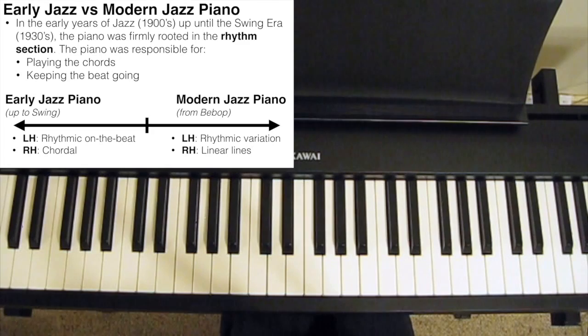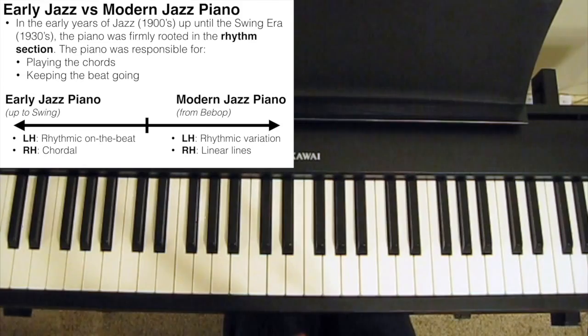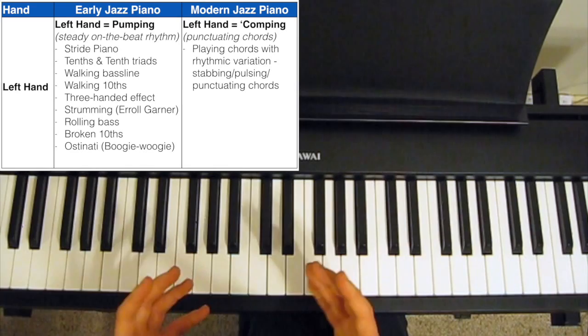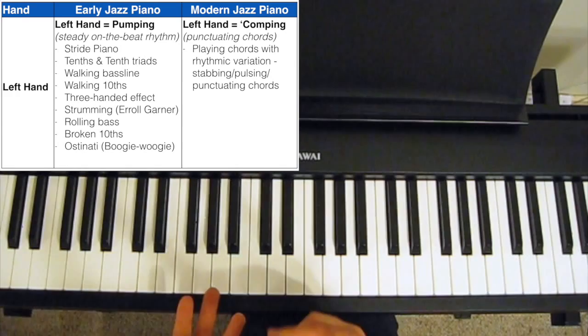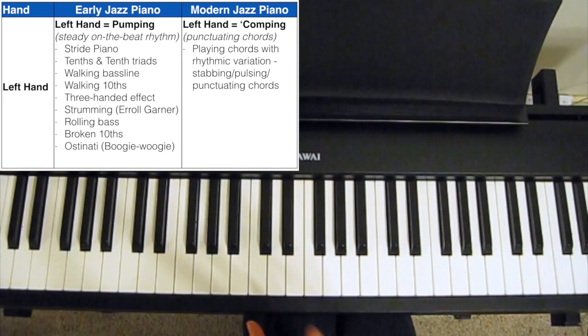Now this technique was pioneered by the pianist Earl Hines, who's considered the father of modern jazz piano. But it was also used by big band leaders and pianists like Count Basie. So if we talk about early jazz pianists, so pre-bebop, essentially New Orleans, Dixieland, and swing music jazz pianists, the left hand of an early jazz pianist would generally just play a steady rhythm and just playing quarter notes on the beat, which is sometimes referred to as pumping.